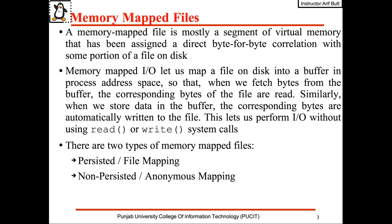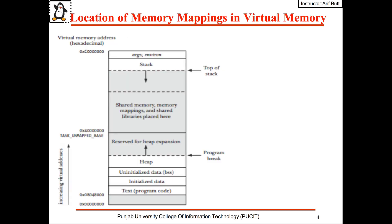There are two types of memory map files. Persisted files are associated with a source file on disk; the data is saved to the source file once the last process is finished. Non-persisted or anonymous mappings are not associated with a file on disk, and when the last process is finished working with the file the data is lost.